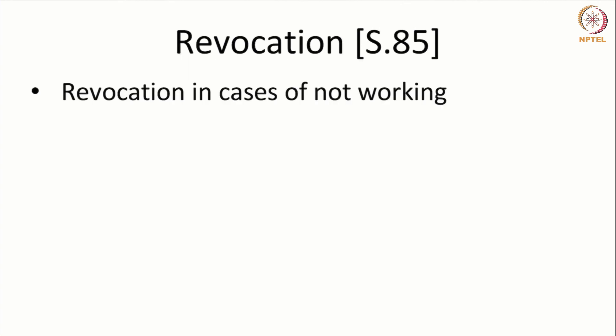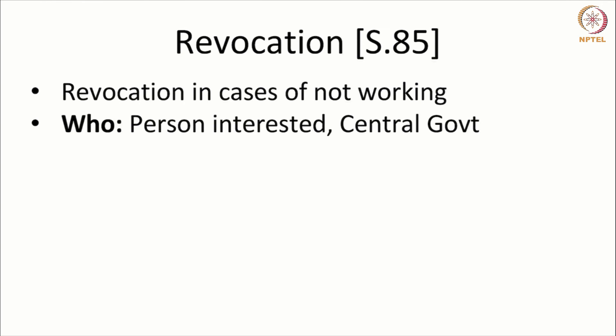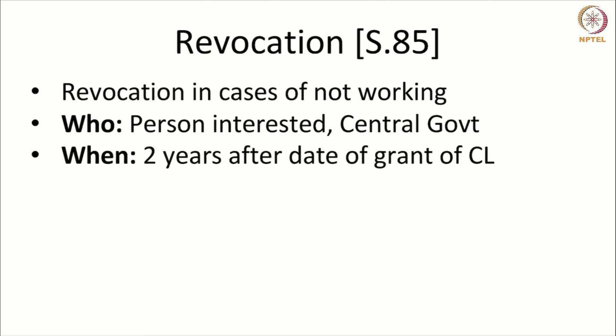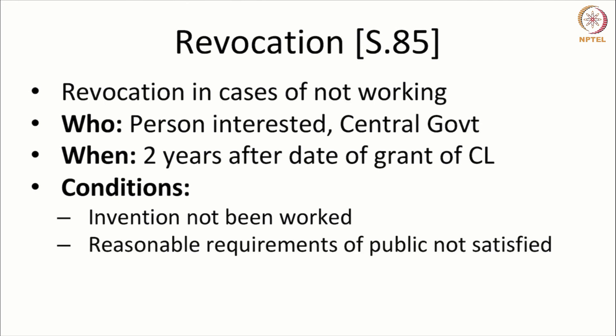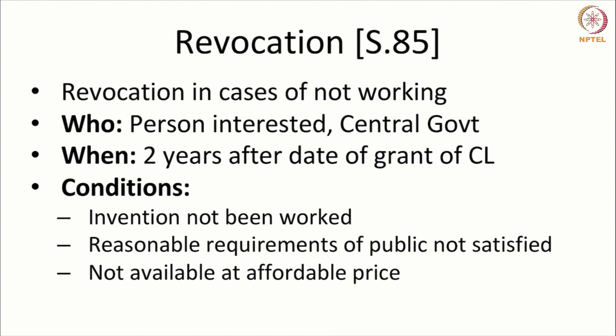There is also a provision where a patent can be revoked after the grant of a compulsory license — in cases of not working. Any person interested or the central government can move for a revocation. The application for revocation can be moved only after two years from the grant of the compulsory license. A compulsory license can only be granted after three years of the patent being granted; if two years after the compulsory license nothing has been done — the patent has not been worked, the reasonable requirements of the public are not satisfied, and the invention is not available at an affordable price — revocation can be sought.